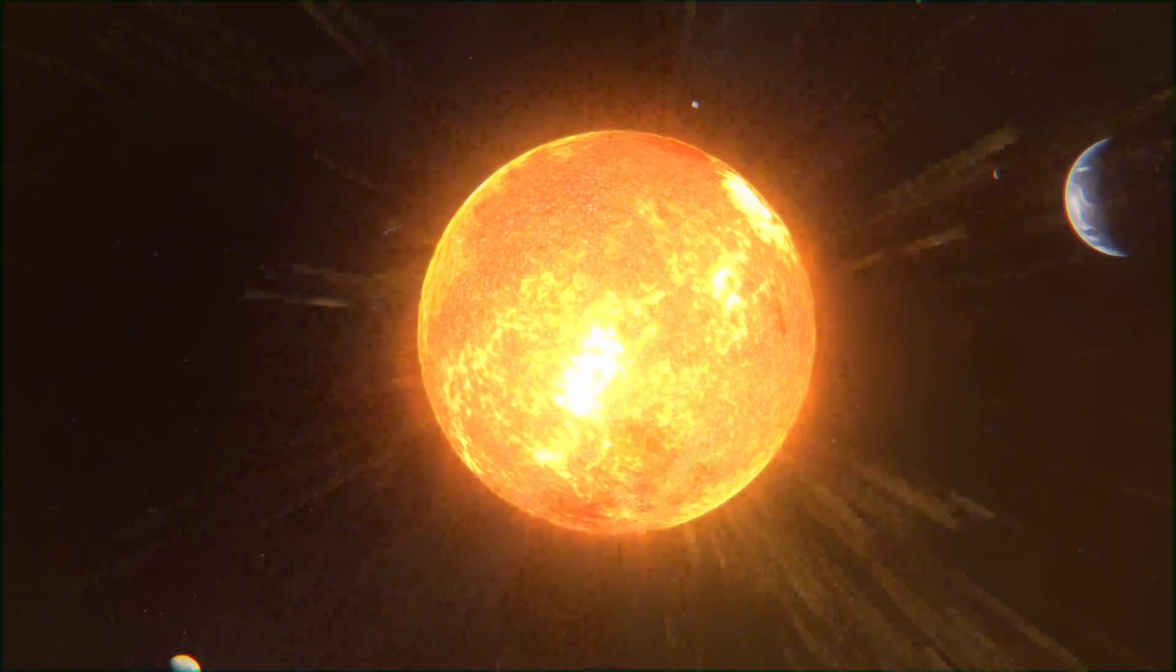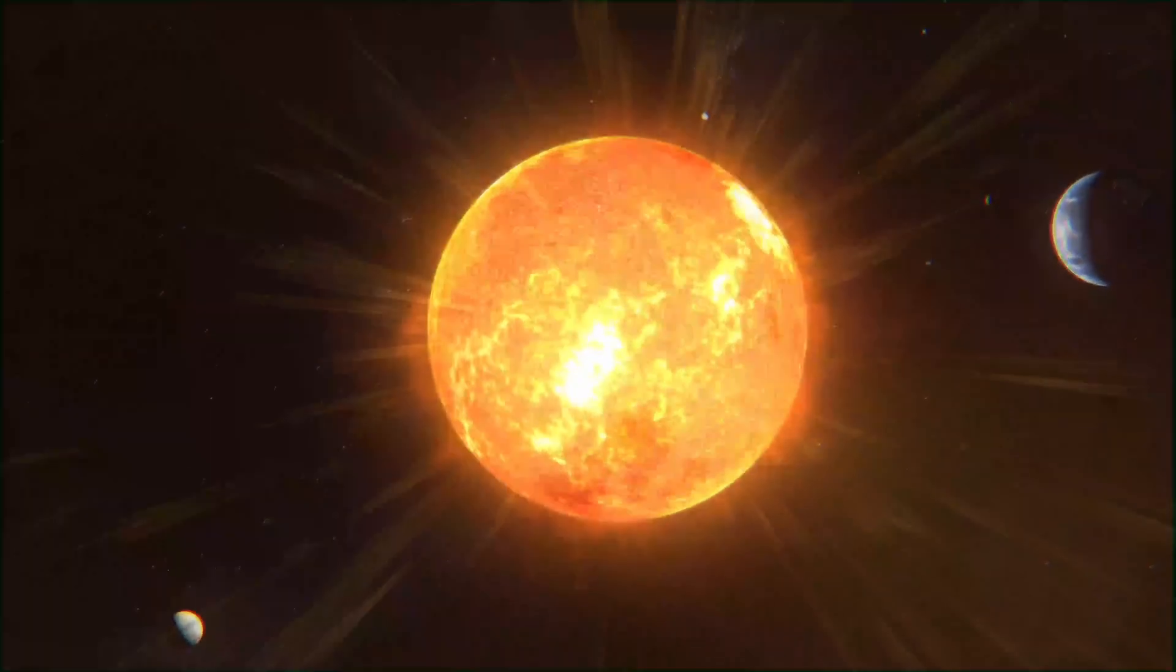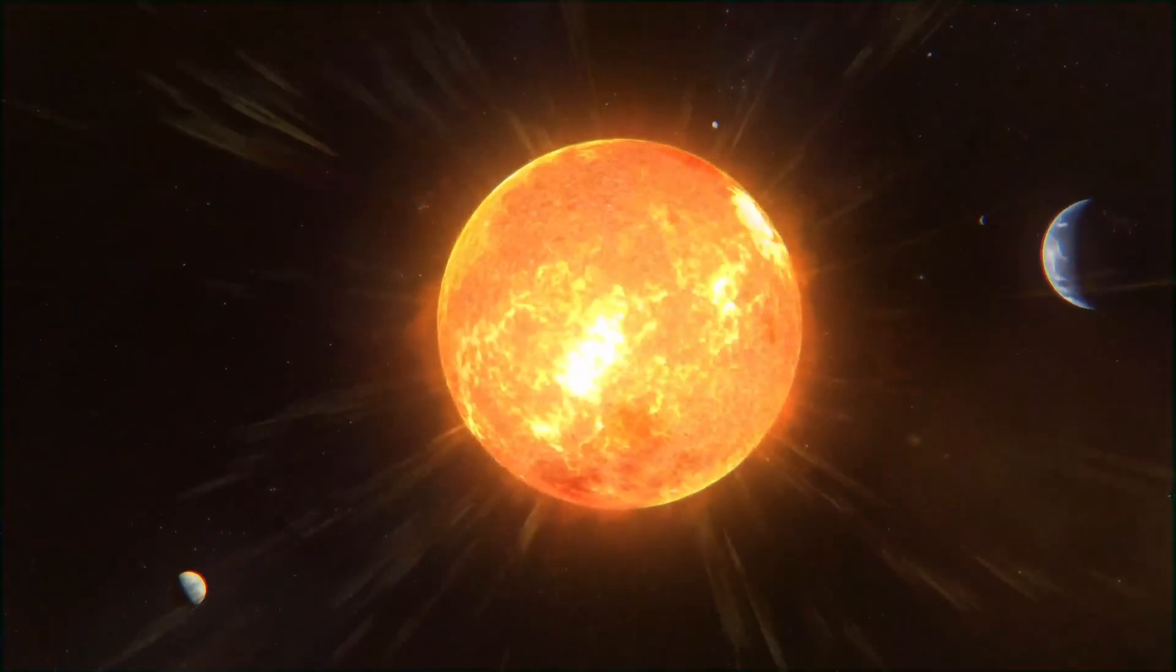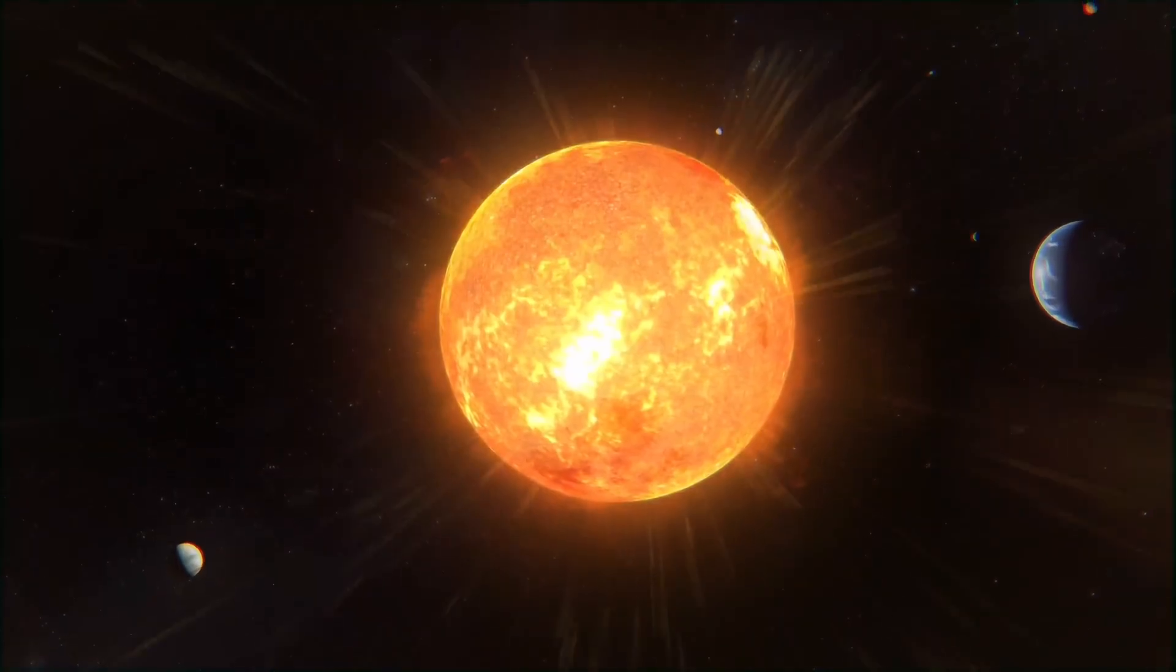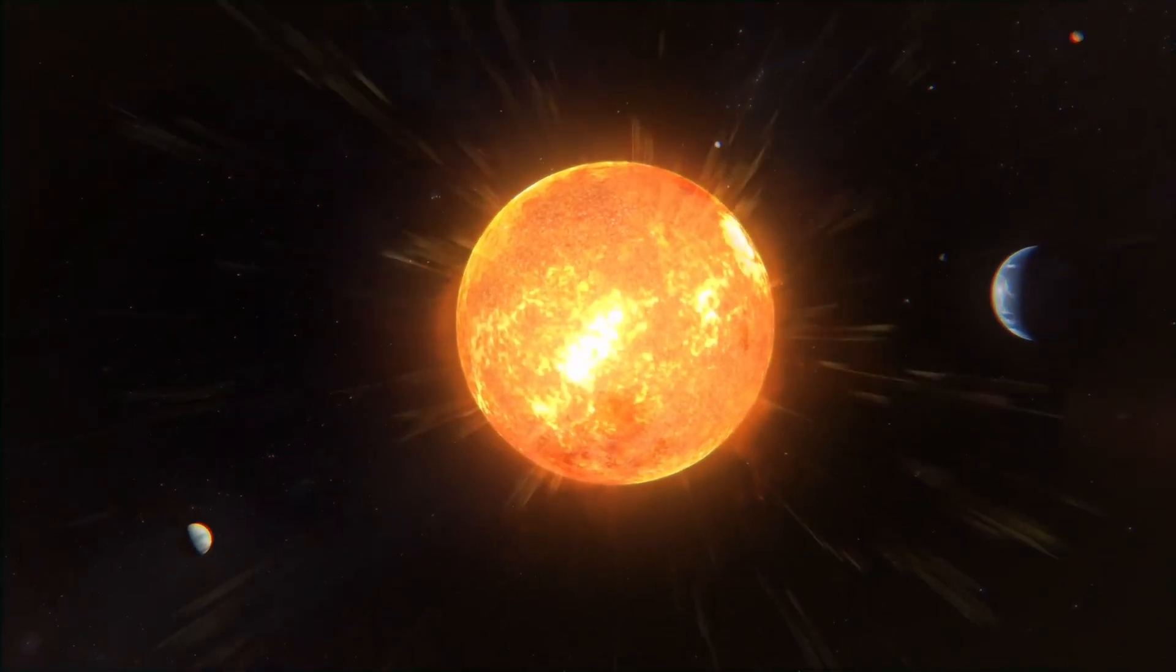From 2024 onward, the sun unleashed an unusually high number of X-class solar flares, the most powerful type of explosion the star can produce. Enormous bursts of plasma, known as coronal mass ejections, hurled themselves across space more frequently. Some collided with Earth, and when they did, we noticed.